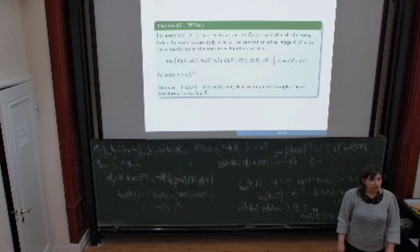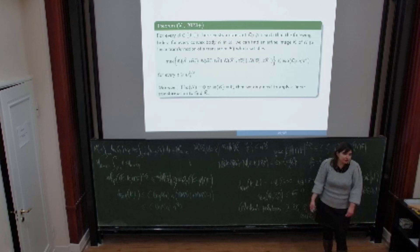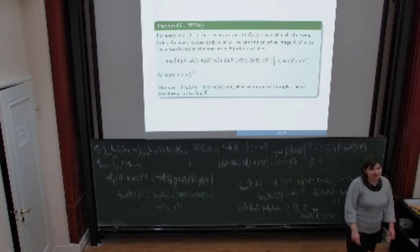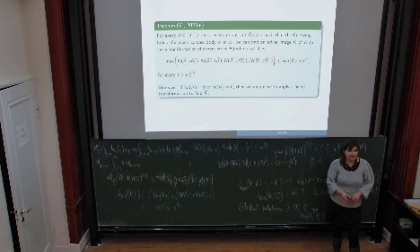Question: what are the conjectured maximizers and minimizers for MM*(K)? Answer: I would expect that the cube and cross-polytope are the maximizers — at least they're conjectured to be — but I'm not sure. For minimizers, I think it's the Euclidean ball.